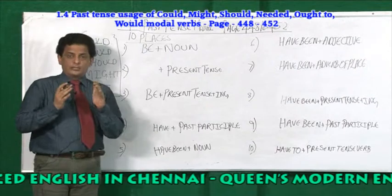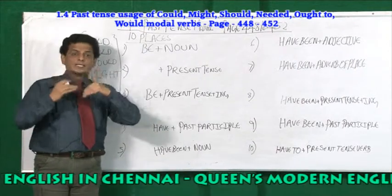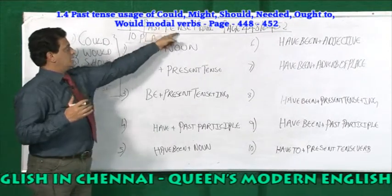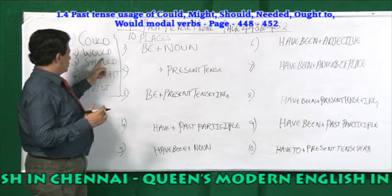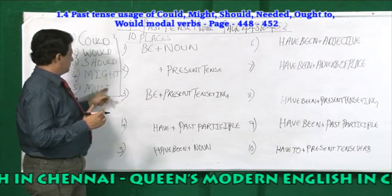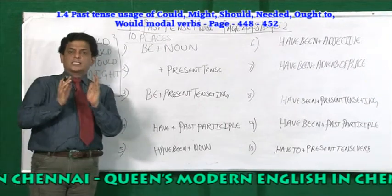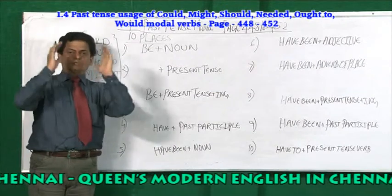Now you are going to see an important chapter. It is the past tense modal verbs. Past tense modal verbs are could, would, should, might, and must. These past tense modal verbs are used in ten places.